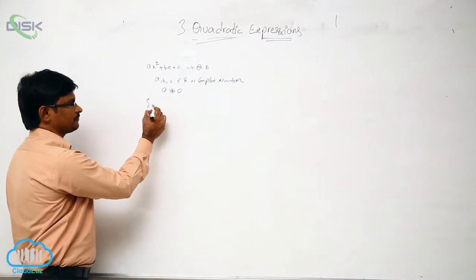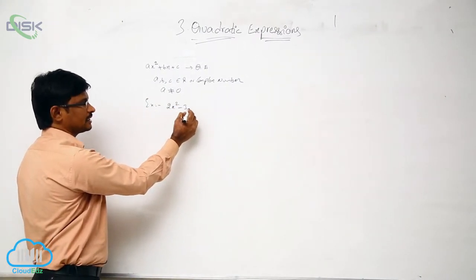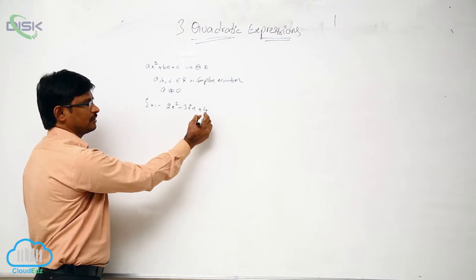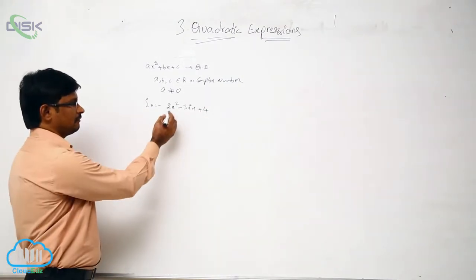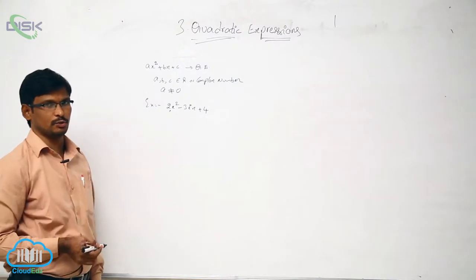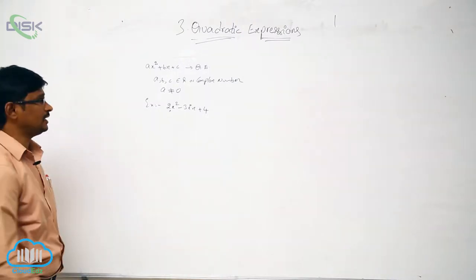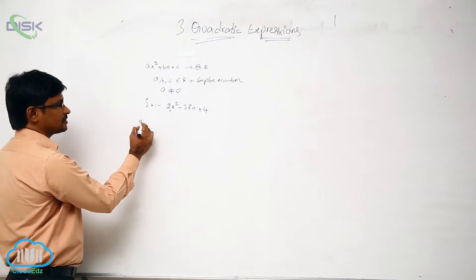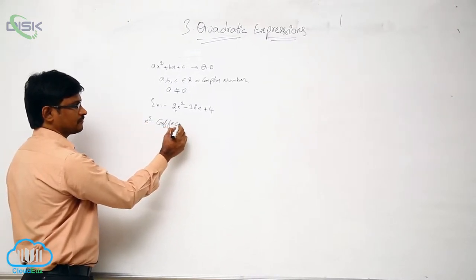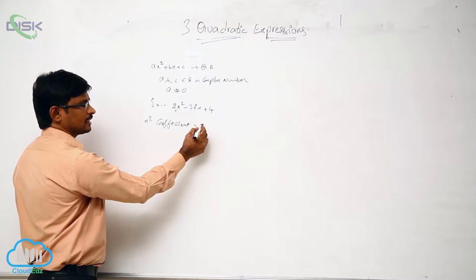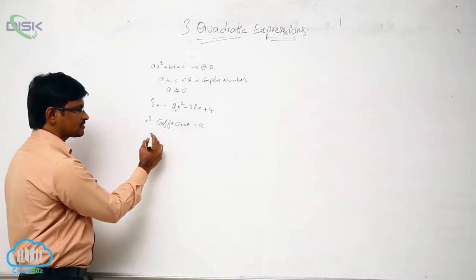For example, 2x squared minus 3x plus 4 is a quadratic expression. Here, the x squared coefficient is 2, and 2 is not equal to 0. In this expression, the x squared coefficient is A, and the x coefficient is B.